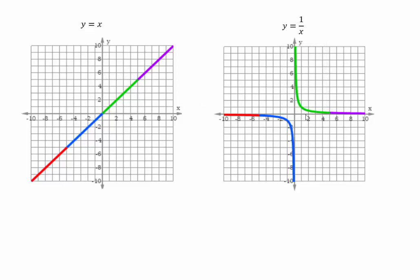At x equals 1, y equals 1. But when x becomes very large — like 10, 100, 1000 — the y coordinate is going to be 1 over 100, which is 0.01; 1 over 1000 would be 0.001, and so on.